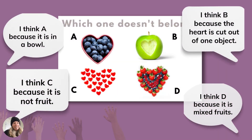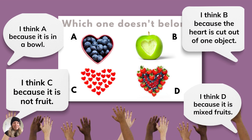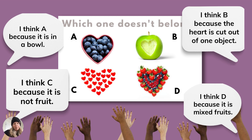Here are a few things I got from my students about this one. Somebody said: I think A doesn't belong because it is in a bowl. I think C doesn't belong because it is not fruit. I think B doesn't belong because a heart is cut out of one object instead of made out of many objects put together. And I think D because it's mixed fruits instead of just one item.